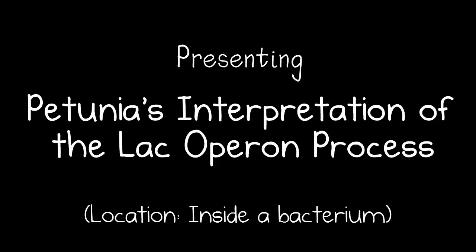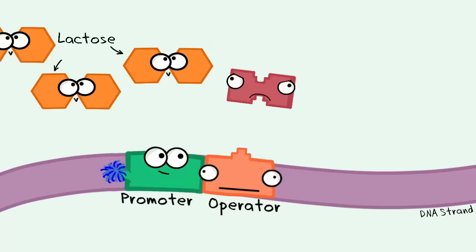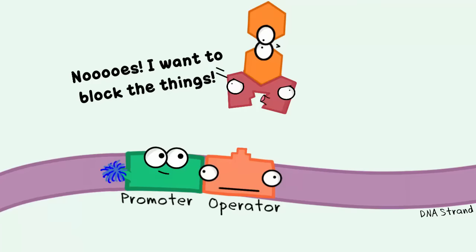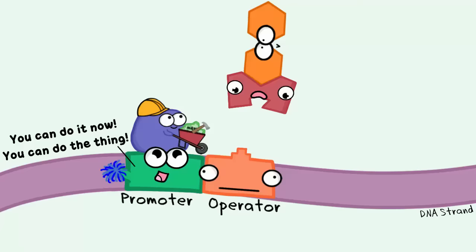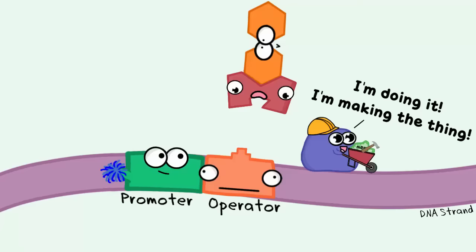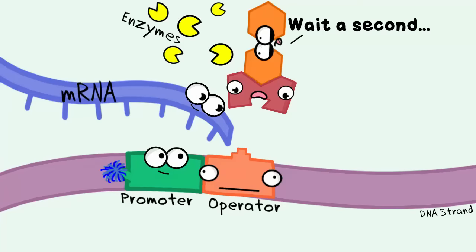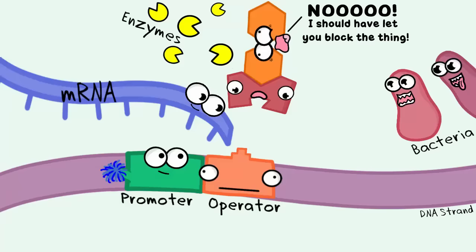But if lactose is around in the environment, something pretty cool happens. The lactose — remember, that's the sugar — binds to the repressor. This changes the repressor's conformation. Try as it might, the repressor cannot bind to the operator. RNA polymerase finds its promoter, binds, and transcribes to make the mRNA from the genes on the operon. That mRNA will be used to make enzymes to break down the lactose sugar. And bacteria like to eat, so that makes them pretty happy.